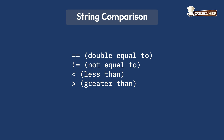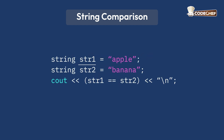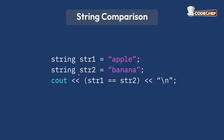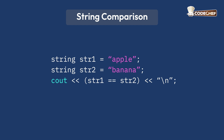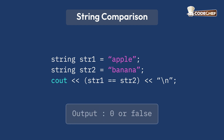Let's consider an example to demonstrate how string comparison works. Here, str1 is apple and str2 is banana. The double equals to operator checks if the two strings are identical. Since apple and banana are different, the result will be 0 or false. If both strings were the same, the result would have been 1 or true.